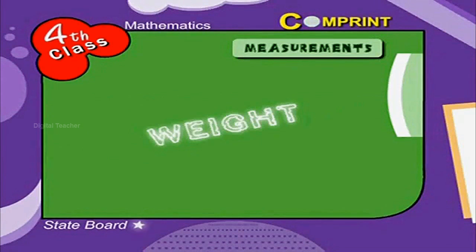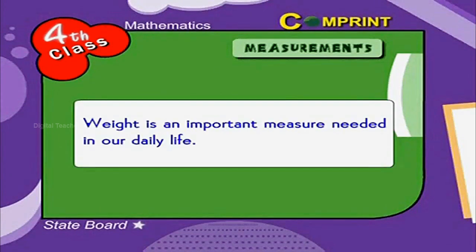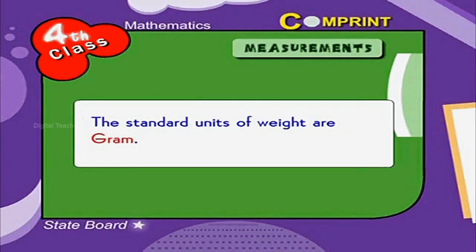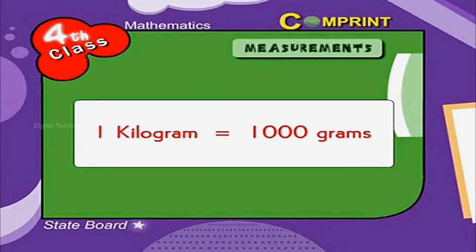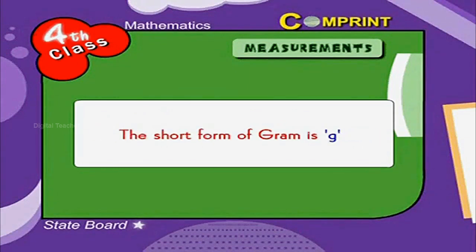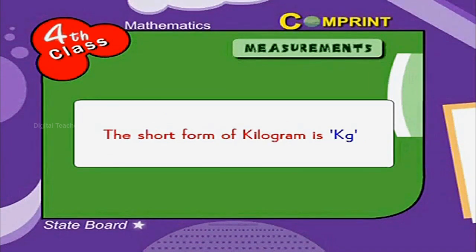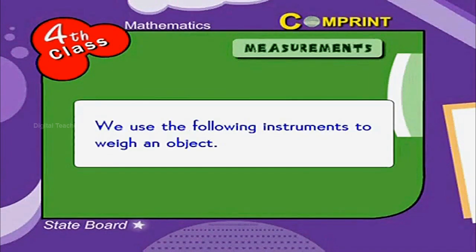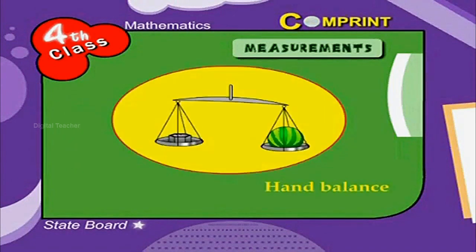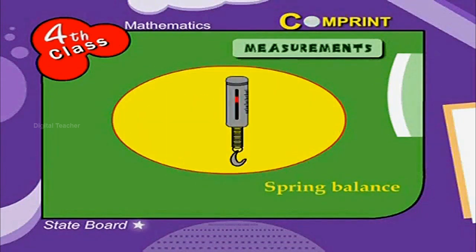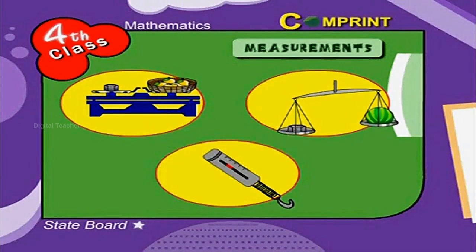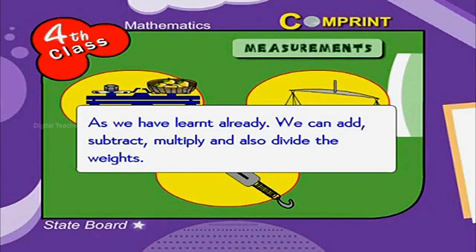Measurement of Weight. Weight is an important measure needed in our daily life. The standard unit of weight is gram. The multiple of weight is kilogram: 1 kilogram is equal to 1000 grams. The short form of gram is g, and the short form of kilogram is kg. We use the following instruments to weigh an object: hand balance, table balance, and spring balance. We can add, subtract, multiply, and also divide weights.